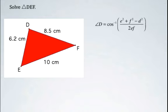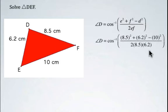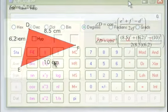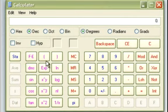So what we're going to do is solve for angle D using this version of the cosine law. We're going to sub in the values: 8.5 for E, 6.2 for F, and 10 for side D. I'll go through how to do this in one step in a calculator.